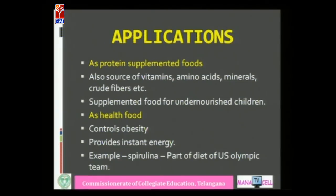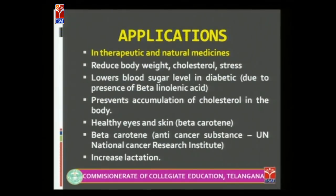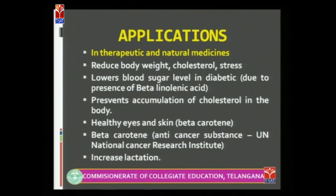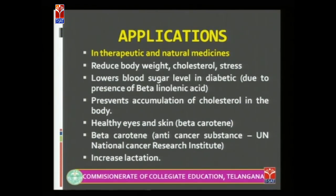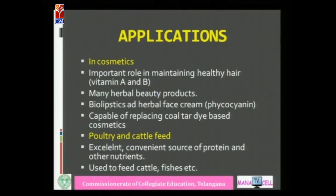Applications of SCP: they can be used as protein supplements for undernourished children, as health food, for controlling obesity, providing instant energy, and in medicines for reducing weight, controlling cholesterol, lowering blood sugar, and improving skin and eye health. Beta-carotene content makes it useful as an anti-cancer substance, and it increases lactation. It is also used in cosmetics for healthy hair, herbal beauty products, bio lipsticks, herbal face cream, and as feed for poultry and cattle.